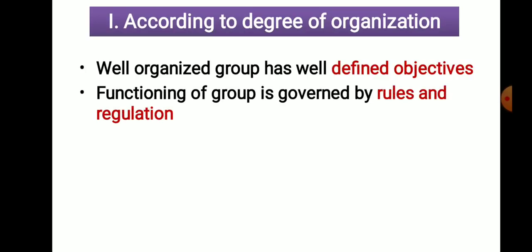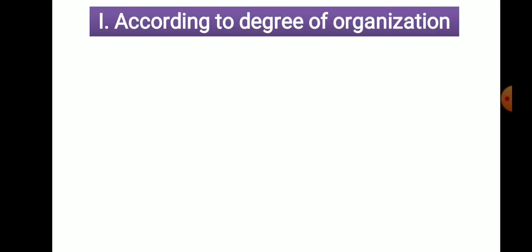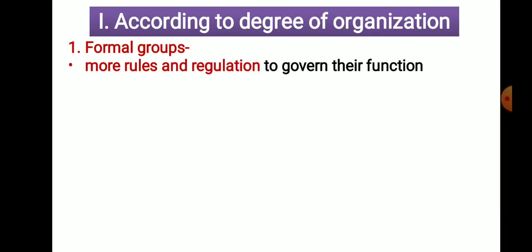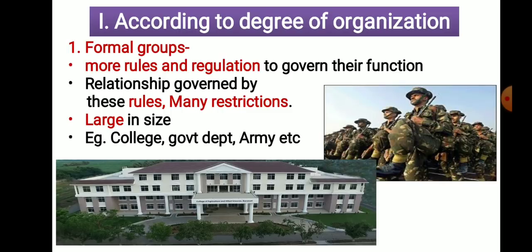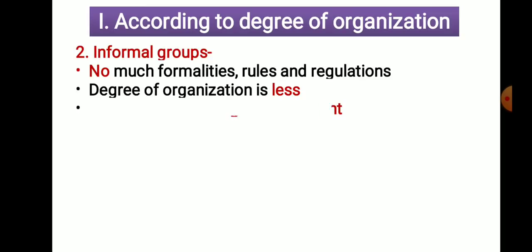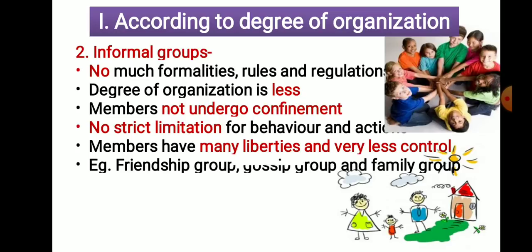Then we discussed the classification. The first classification is according to degree of organization — meaning the number of rules and regulations followed by the group. On that basis, the degree of organization is defined. If rules and regulations are present, the first type is formal groups. Examples are army, government department, and college. The second type is informal groups, meaning no rules or regulations. Examples are friend circles, family, etc.